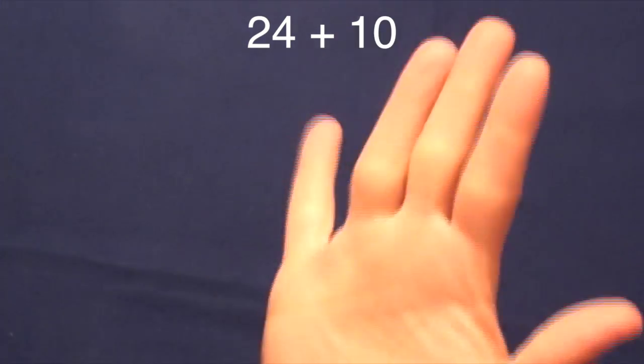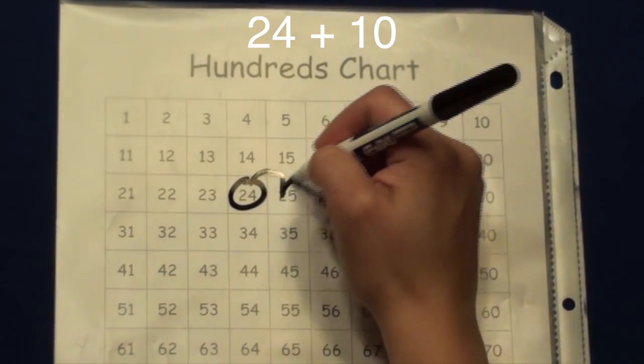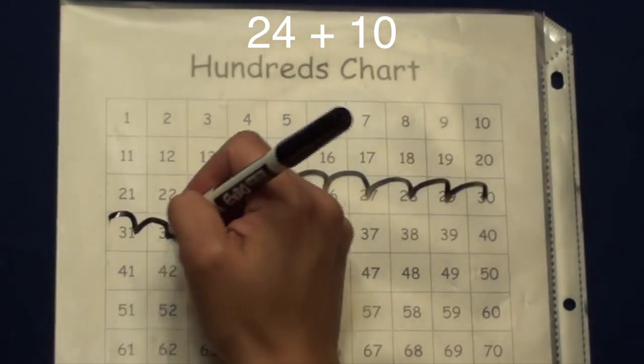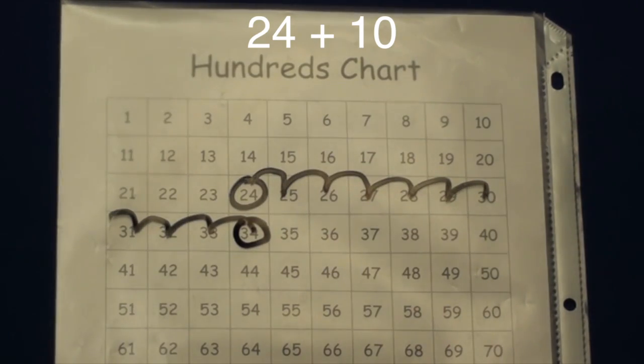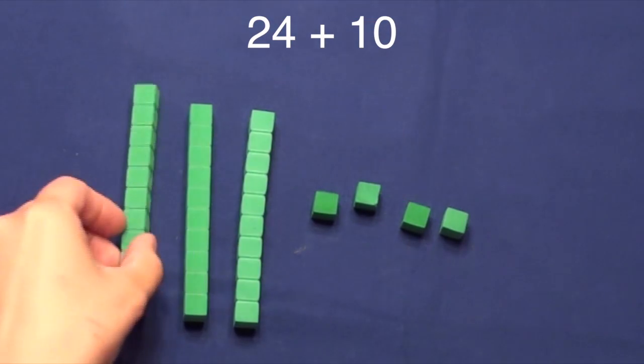Let's try a problem. When solving 24 plus 10, you could add 10 by individually counting with your fingers, or add 10 by individually counting on a hundreds chart. Or you could use a fabulous 10 more strategy and just add one 10.